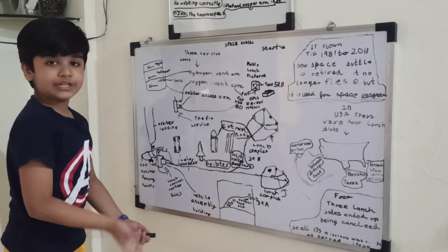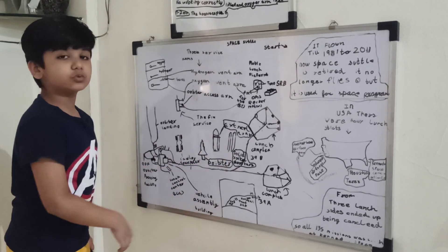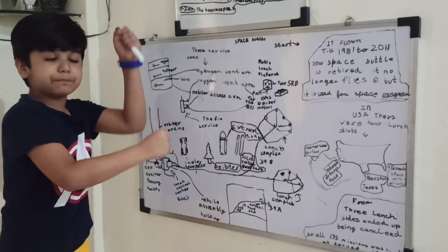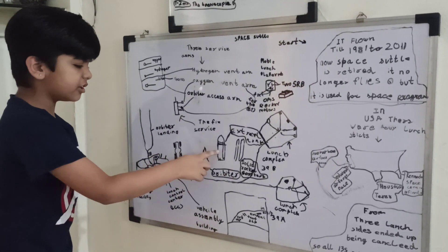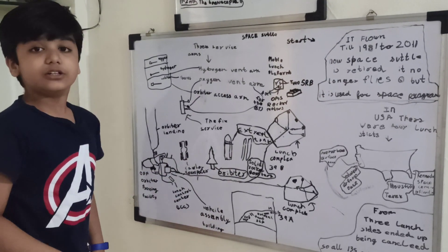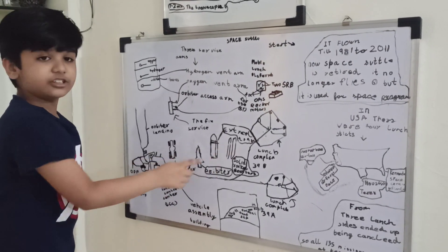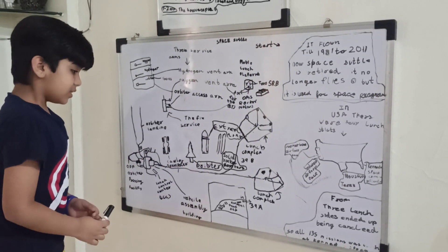The work starts over here at the VAB. The solid rocket boosters are assembled piece by piece, and then the external tank is lifted and mounted to the side.